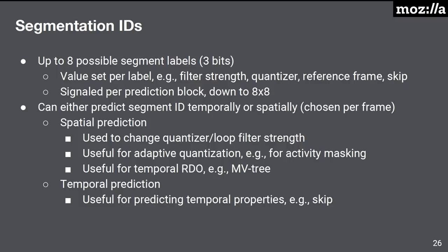Segmentation IDs allow you to segment the image into different regions sharing common parameters. There are eight possible segment labels, each with filter strengths, quantizers, a reference frame, or skip. This is signaled per prediction block down to 8×8. You can either predict the segment ID temporally or spatially, chosen per frame. For spatial prediction, you could do adaptive quantization for activity masking or temporal RDO with an MVTree algorithm. For temporal prediction, in video conferencing you could use it to accurately predict skip flags on the background.